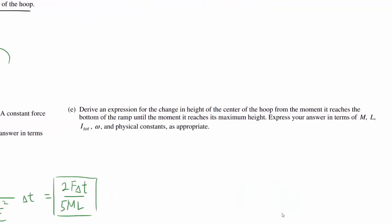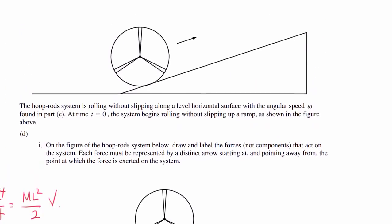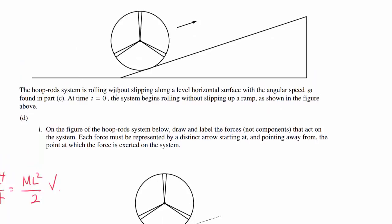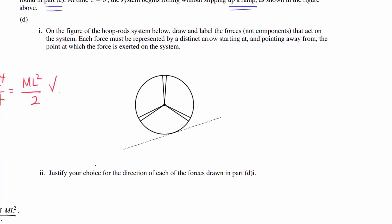We are not done — there are also Parts D and E to complete. The hoop-rods system is rolling without slipping along a level horizontal surface with the angular speed omega found in Part C. At time t, it begins rolling without slipping up a ramp. On the figure, we draw and label the forces — not components. So don't break gravity into components parallel and perpendicular to the incline. Gravity acts on the center of mass pointing directly downward, and normal force acts perpendicular to the surface.